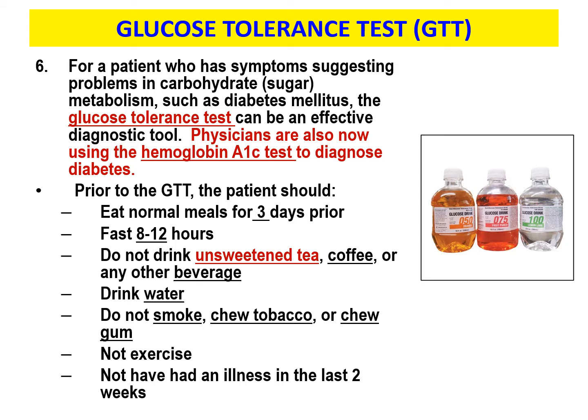Prior to the GTT test, phlebotomists talk to patients about what they need to do beforehand. Make sure that over the next several days they eat normal meals. Then they should fast 8 to 12 hours before the test. They should not drink unsweetened tea, coffee, or any beverage other than water — we want them hydrated, but only with water. The night before and leading up to the test, they should not smoke, chew tobacco, or chew gum. We don't want them to exercise that morning, and we don't want this test done if they've had an illness within the last two weeks.